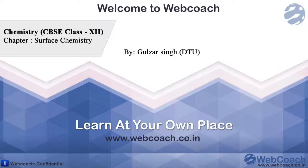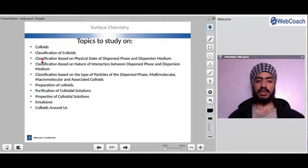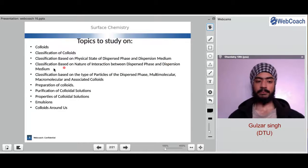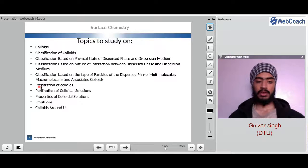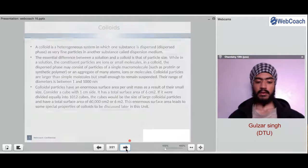Hello. Today we are going to study surface chemistry. This is a continued session. The topics we will be studying in this session are colloids, the classification of colloids, classification based on physical state of dispersed phase and dispersion medium, classification based on the nature of interaction between dispersed phase and dispersion medium, classification based on the type of particles of dispersed phase — multimolecular, macromolecular and associated colloids — the preparation of colloids, the purification of colloidal solutions, the properties of colloidal solutions, emulsions and colloids around us.